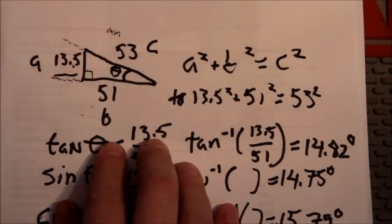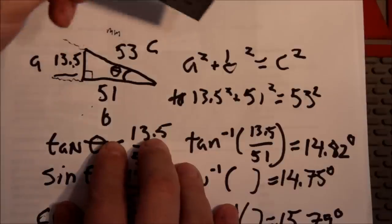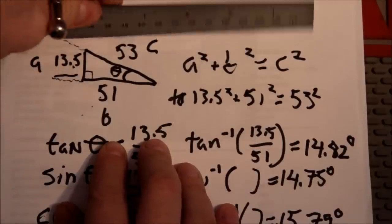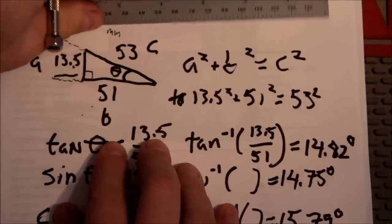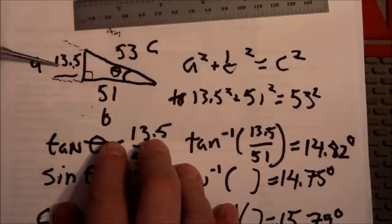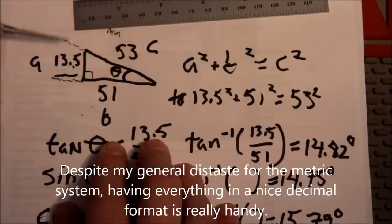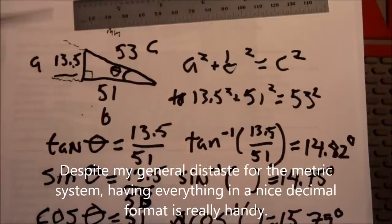So I measured this with my new metric Starrett ruler here, or scale. And so all these numbers are in millimeters. And these are the values that I got. So we have a right triangle. And let's just call this a, b, and c.